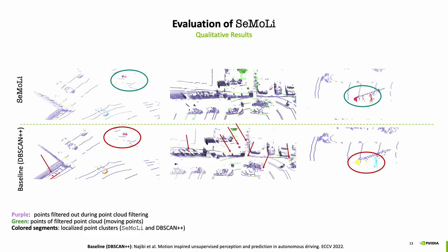In our key results, we compare Simoli to our heuristic-based baseline dbscan++ and find that Simoli leads to less under-segmentation. For example, it is able to distinguish two pedestrians walking next to each other, whereas dbscan++ is not. Also, Simoli leads to less over-segmentation, for example in this case where a car is represented by very few sparse points.